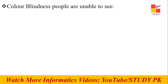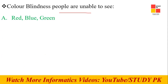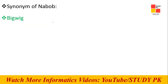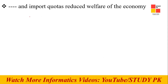Next question: color blind people are unable to see which of the following colors? The answer is red, blue, and green. Next, a vocabulary question about 'Nabokka' — it means something very big, in the billions or millions range. 'Big big' is the right answer.